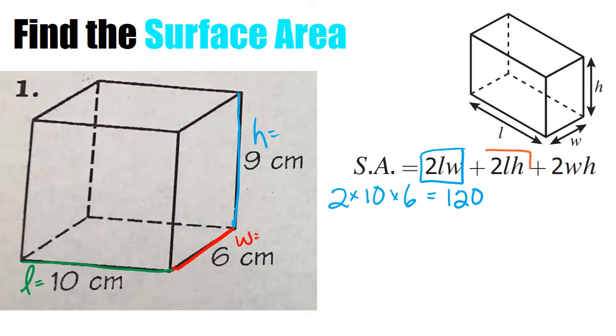Now let's do this, the second part, which is 2 times the length times height. So I'm going to do 2 times my length is 10 times the height is 9. So when I do that, I do 2 times 10 is 20. 20 times 9 gives me 180. So there's the second part.